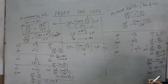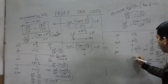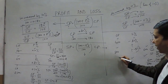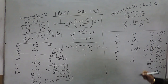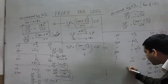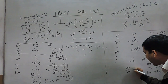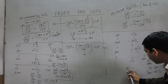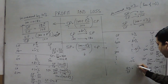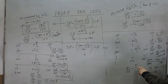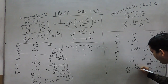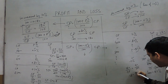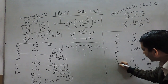The third type: loss percent and selling price are given, find the cost price. For example, there is a loss of 10% and the article is sold for Rs.180. A decrease of 10% means SP / CP = 90 / 100. So 180 / CP = 90 / 100. Solving, the cost price comes out to be Rs.200.